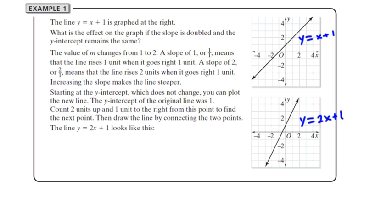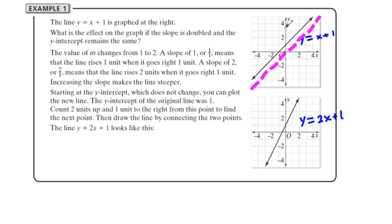A slope of one, when the x-axis and y-axis have the same scale, produces a perfectly diagonal line. That's what a slope of one looks like when the scales are equal.